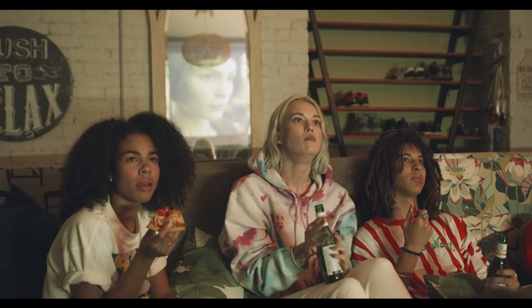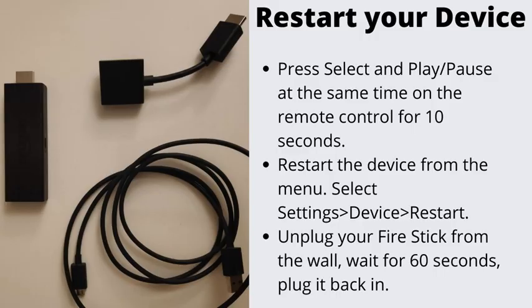Number 3: Restart Your Fire Stick. A good old restart never hurt anybody, and this is one of the best ways to fix temporary system errors and configuration problems. There are 3 ways to restart the device: unplug your Fire Stick from the wall and wait 60 seconds before plugging it back in; restart from the menu by selecting Settings, then Device, then Restart; or long-press the Select and Play/Pause buttons concurrently for at least 5 seconds.